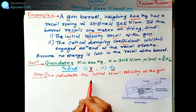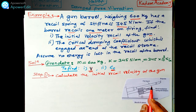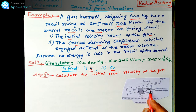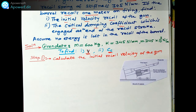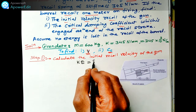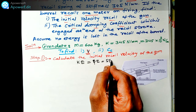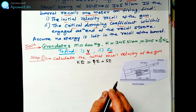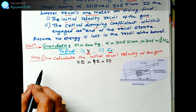First, we calculate the initial recoil velocity of the gun barrel. For this purpose we use the concept of energy — kinetic energy and strain energy. The maximum kinetic energy is equal to the potential energy, or we can say strain energy. These both are the same, and we are utilizing this to calculate the velocity.